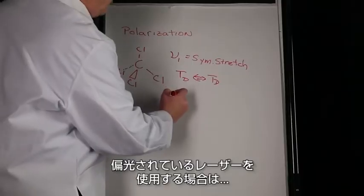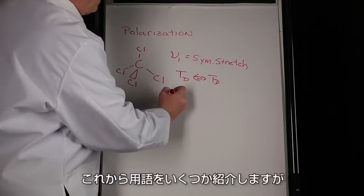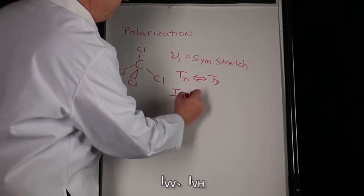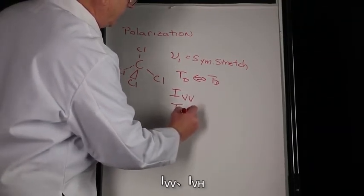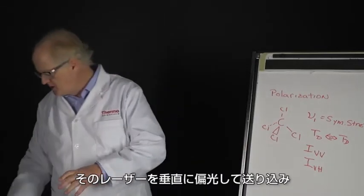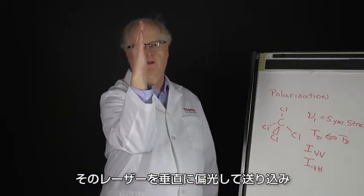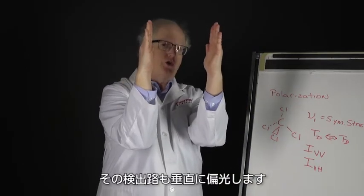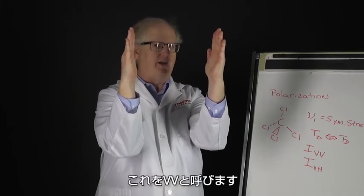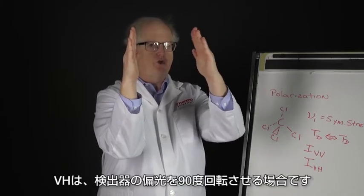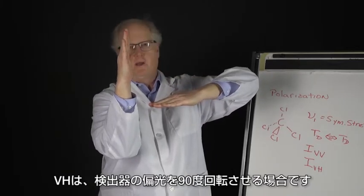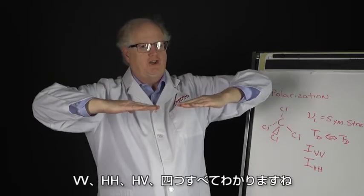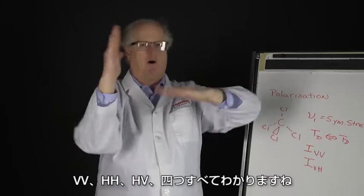If I use a laser that is polarized—and I'm now going to introduce some nomenclature that will define better later: IVV and IVH—I'm going to send the laser in polarized vertically, and then I'm going to use my detector. The detector channel is also going to be polarized vertically. That's called VV. VH is when I rotate my detector polarization perpendicular.